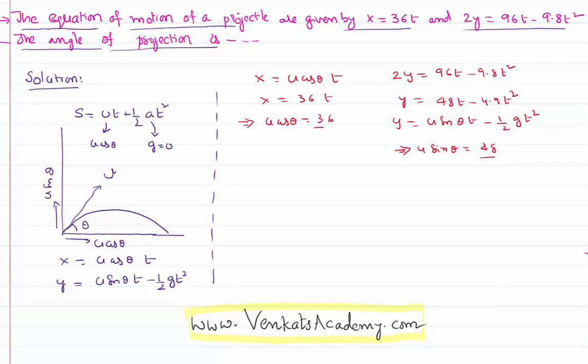Now you know the u cos theta, you know the u sin theta. Dividing these 2 equations u sin theta by u cos theta is equal to 48 by 36. That is nothing but equal to 4 by 3. That implies tan theta is 4 by 3.